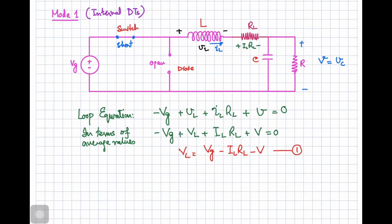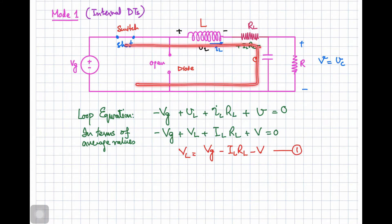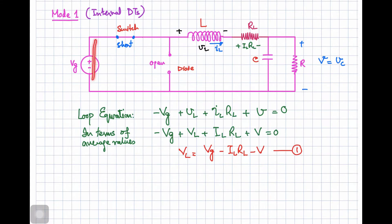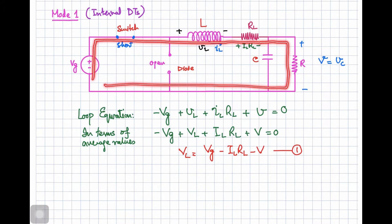In the first mode of operation when the switch is in the on state, it is modeled as a short circuit and the diode is in the open circuit state due to positive voltage at the cathode with respect to the anode. The current path flows in either loop. Writing the KVL equation: minus Vg plus inductor voltage plus IL·RL plus load voltage equals zero.